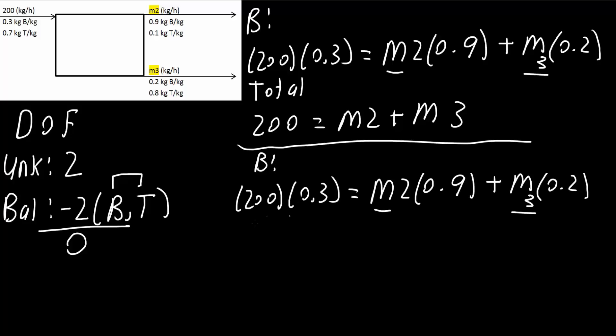B was this. And next, we will do a T, a T balance. So, we could say 200 times 0.7 is equal to M2 times 0.1 plus M3 times 0.8.